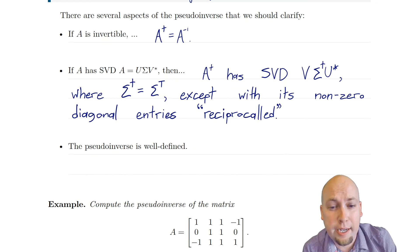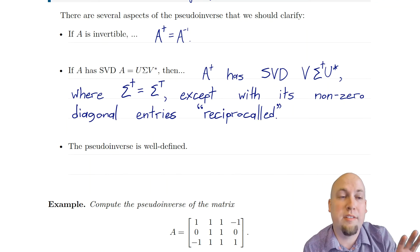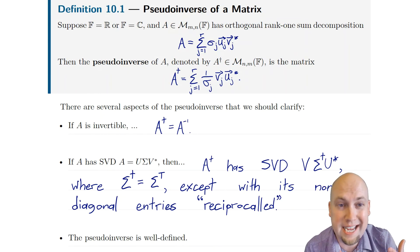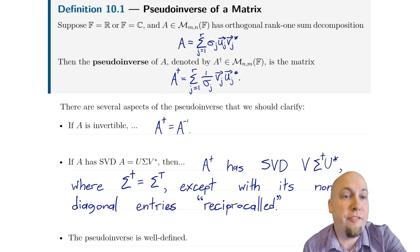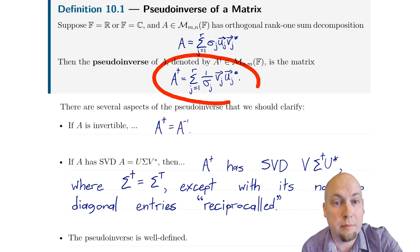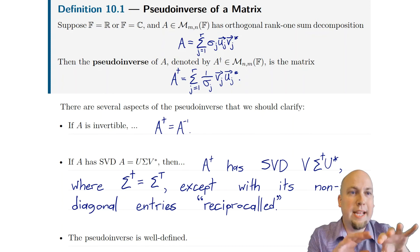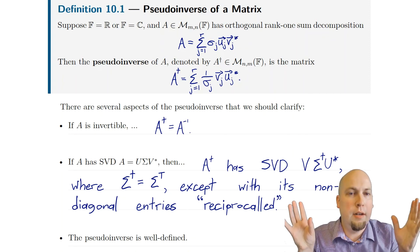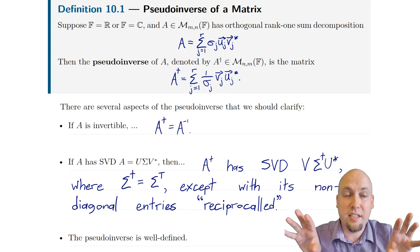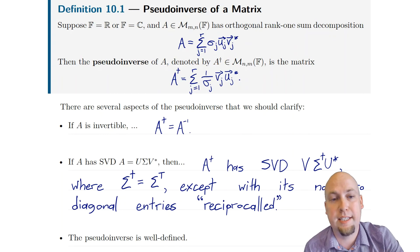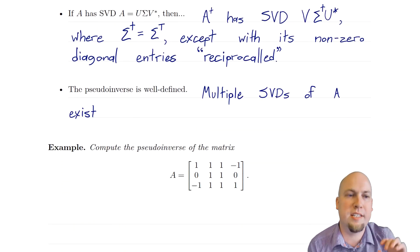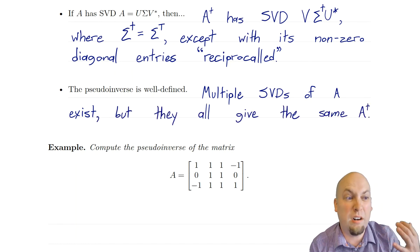One other thing to clarify: the pseudo-inverse is well-defined, meaning it doesn't depend on which particular singular value decomposition or orthogonal rank-one sum decomposition of A you use. Even though there are lots of different SVDs for a particular matrix — you have a lot of freedom in how you choose U and V — no matter which U and V you choose, as long as it is a valid SVD, you get the exact same A-dagger. All the freedoms cancel out and you end up with the same A-dagger. Multiple SVDs exist, but they all give the same A-dagger.